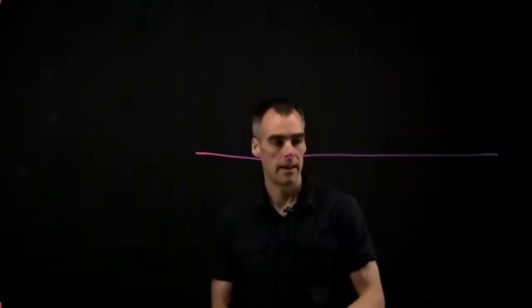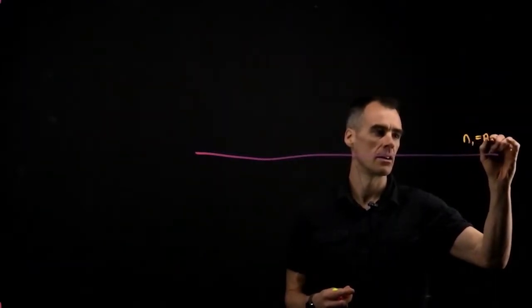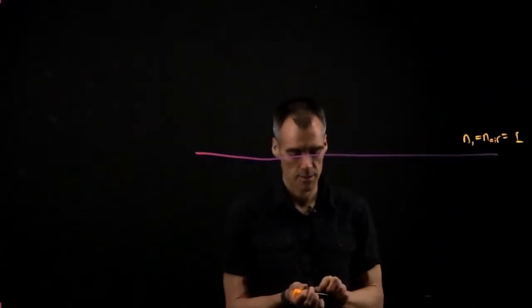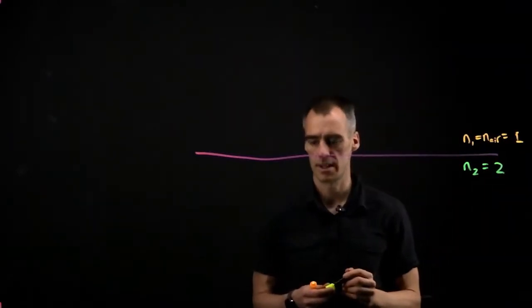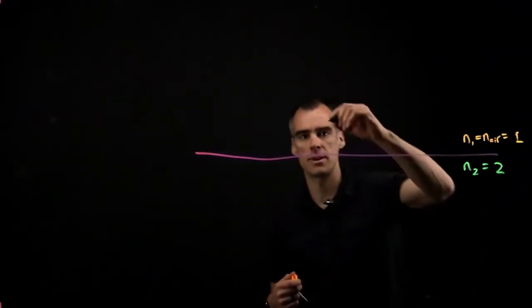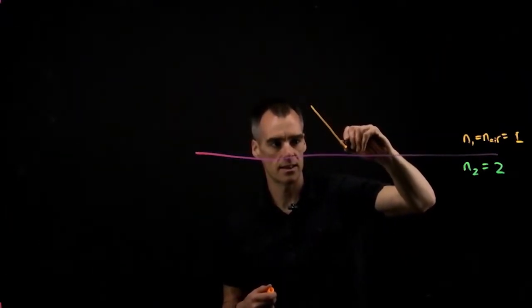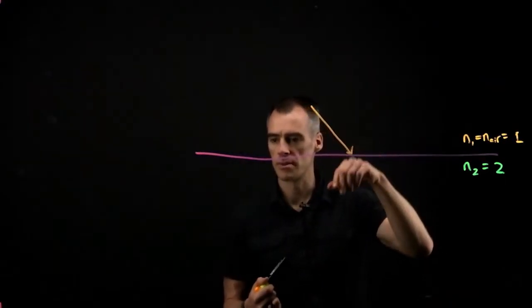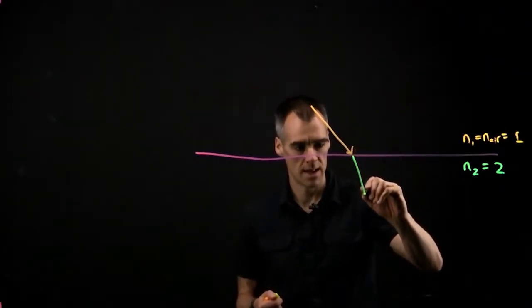So let's say we have this interface here, with N1 on the top — we'll say this is air, so N1 equals 1 — and N2 on the bottom, which we'll set equal to 2. We have an incident ray coming in through the air at some angle, and it refracts because it's going through a medium of different refractive index, so it bends down in this direction.